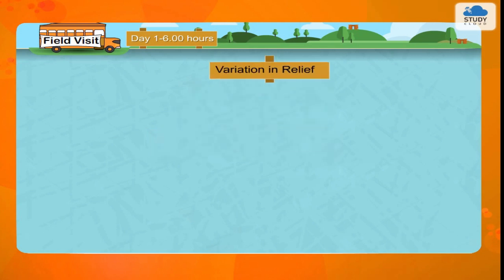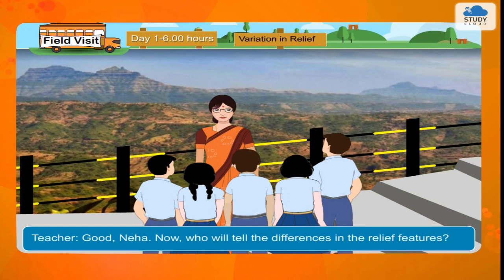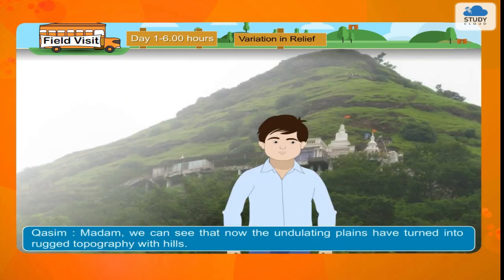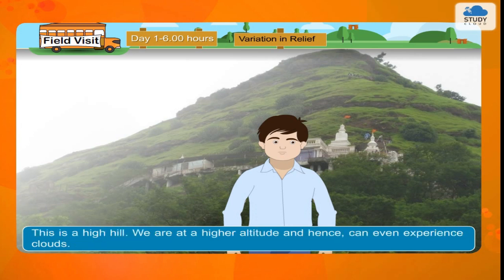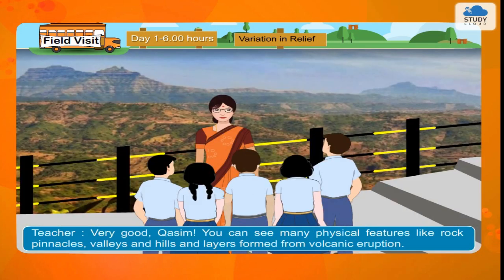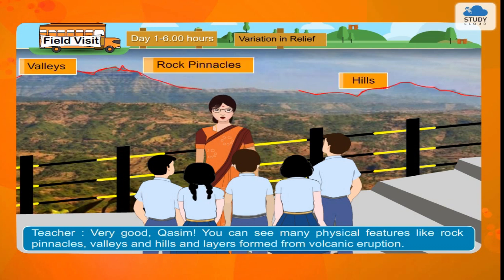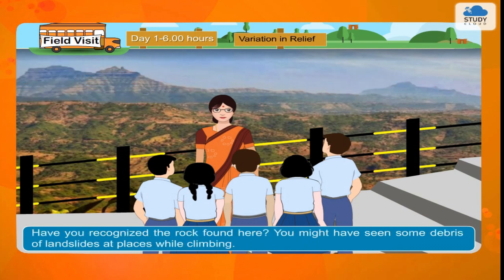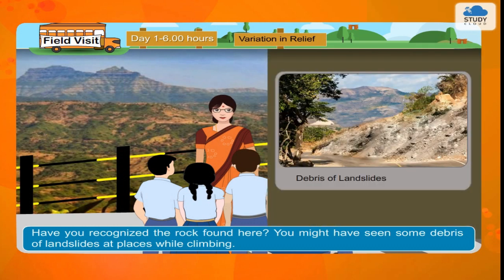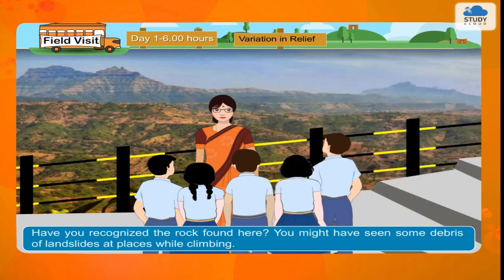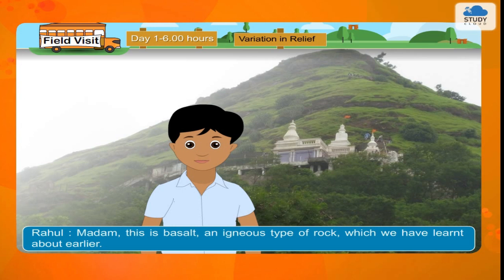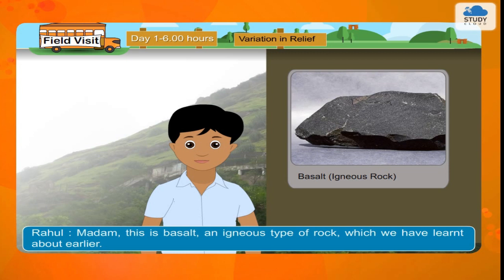Variation in relief. Teacher: Good Neha. Now who will tell the differences in the relief features? Kasim: Madam, we can see that now the undulating plains have turned into rugged topography with hills. This is a high hill. We are at a higher altitude and hence can even experience clouds. Teacher: Very good Kasim. You can see many physical features like rock pinnacles, valleys and hills and layers formed from volcanic eruption. Have you recognized the rock found here? You might have seen some debris of landslides at places while climbing. Rahul: Madam, this is basalt, an igneous type of rock which we have learnt about earlier.